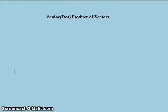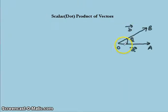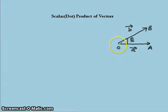Starting with the scalar product of vectors, which is also known as the dot product. Since vectors have directions, they cannot be multiplied like numbers. We consider two nonzero vectors a and b, which are shifted to a position where they intersect at point O and make an angle theta between them.